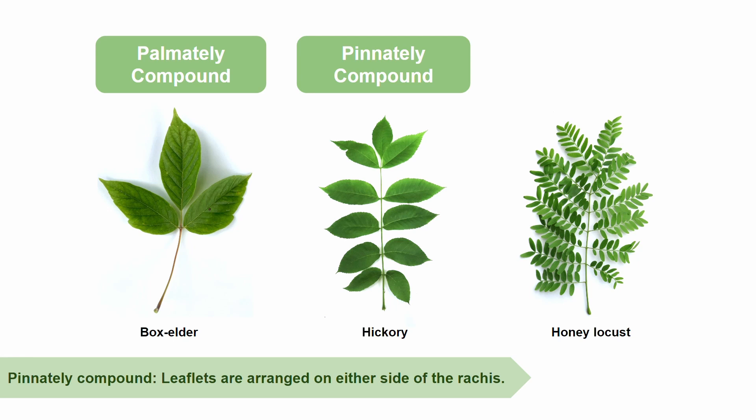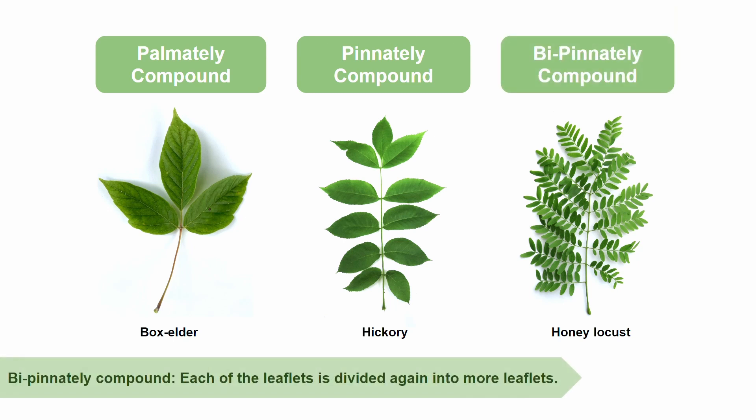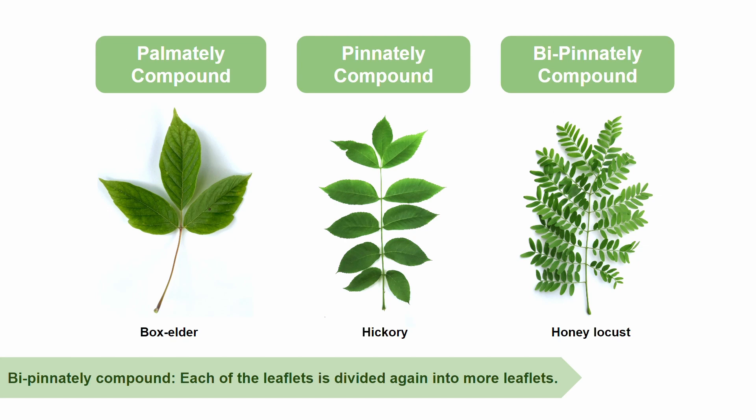We can take this a step further because some leaves are bipinnately compound, which means that each of the leaflets is divided again into more leaflets. An example of a tree that is bipinnately compound is Gleditsia triacanthos, or the honey locust tree.